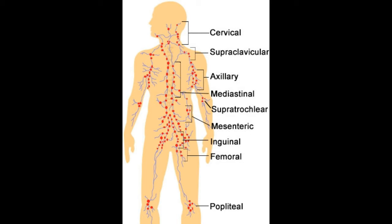Supraclavicular lymph nodes: Situated along the collarbone or clavicle, they drain lymph from parts of the collarbone, and the upper nodes can also be considered a part of the cervical lymph node. Axillary lymph nodes: These nodes are present in the armpit area. They are divided into two types, namely superficial and deep lymph nodes. They drain lymph from the arm, walls of the thorax and breast.